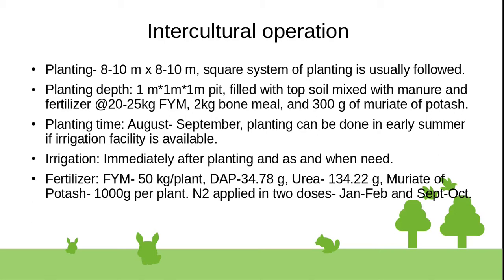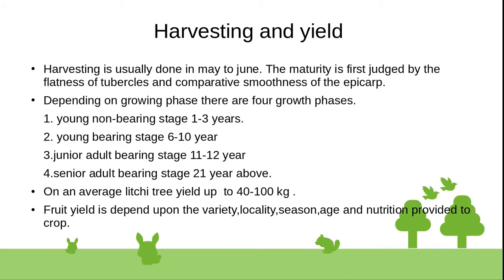Fertilizer dose per plant: 25 kg FYM, DAP 34.78 grams, urea 134.22 grams, muriate of potash 1000 grams per plant. Nitrogen is applied in two doses: January to September and September to October.